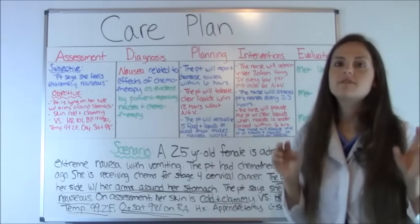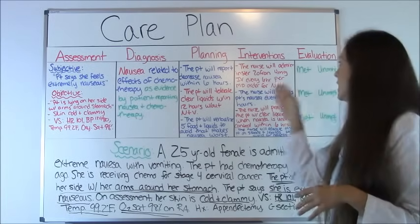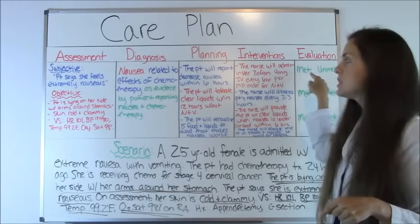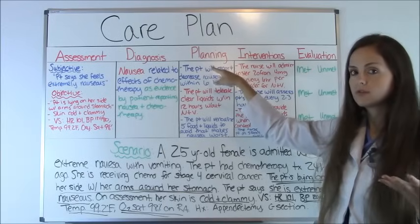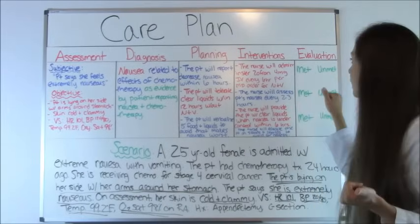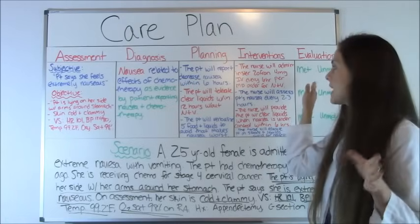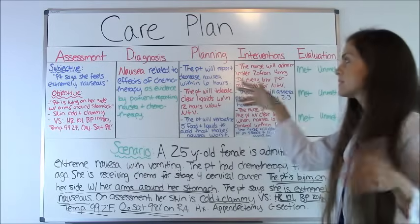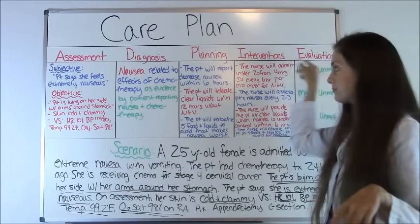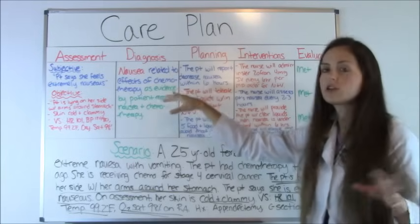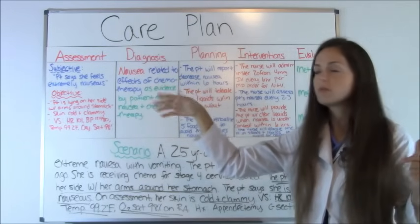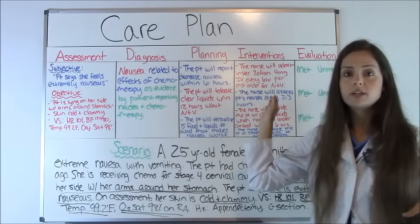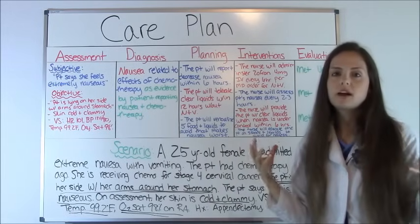Our last step is evaluation. On a care plan you'll typically have 'met' or 'unmet' and you circle whether the patient has met that goal. If they do meet it, great. If they don't, you need to either change your nursing diagnosis because something else may be going on, change the goal, or add more interventions so they can meet that goal. That's all evaluation is doing.